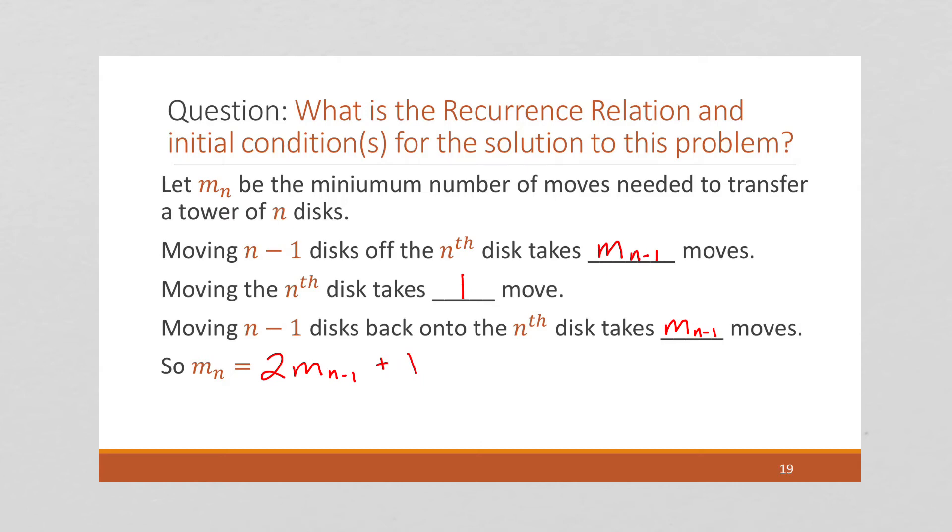So m of n is going to equal 2 times m of n minus 1 plus 1. And we have a recurrence relation. We can talk about the number of moves of n disks in terms of the number of moves of n minus 1 disks. Now remember, a recurrence relation always needs to have initial conditions. So we want to think about what happens if we have a tower of just one disk, and we talked briefly about that earlier. That's going to require just one move. You move it from pole A to pole C and you're done. So this is our recurrence relation.